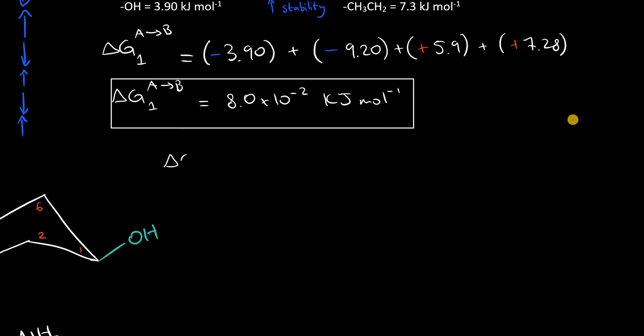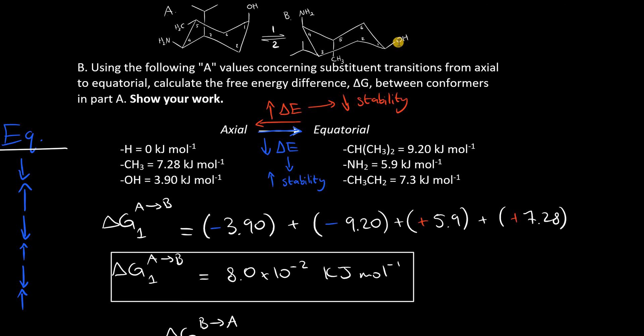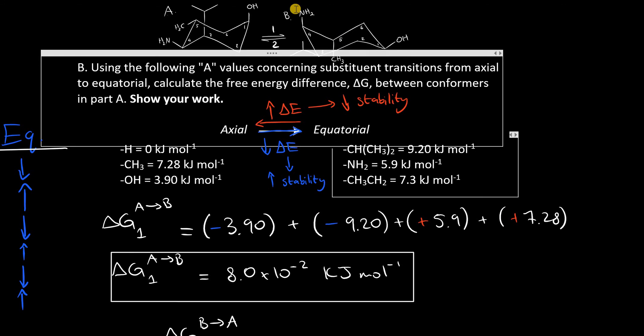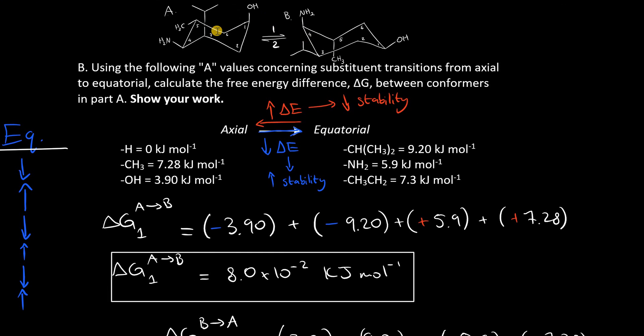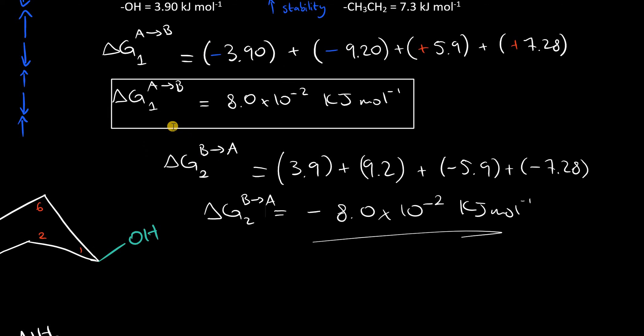So delta G from B to A is just the total opposite of delta G one. The equatorial OH and equatorial isopropyl move on to axial positions, so those will be positive values right here, positive 3.9, positive 9.2. And the trans-axial amine and methyl groups will then translate onto equatorial bonds, so we'll assign negative signs here for 5.9 and 7.28. So the transition from B to A is more stable compared to the transition from A to B, which is a gain of energy of 0.08 kilojoules per mole.